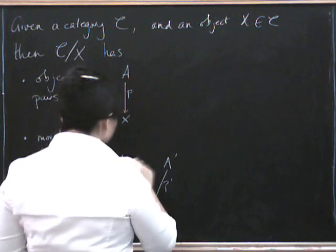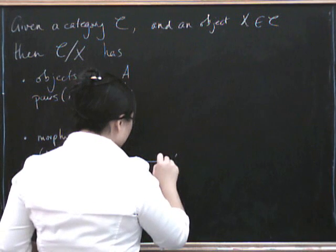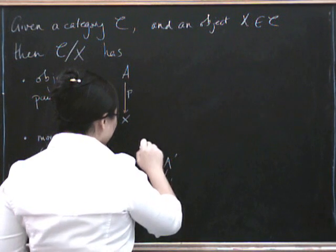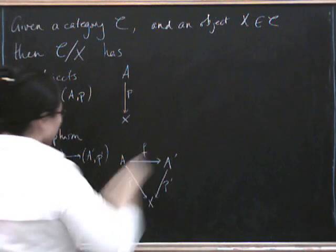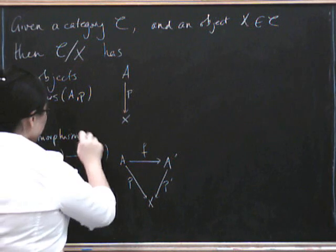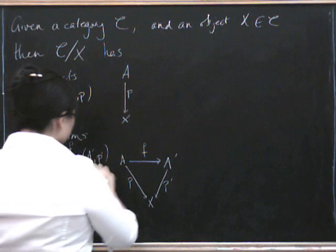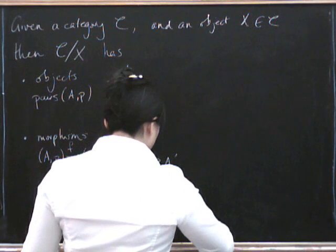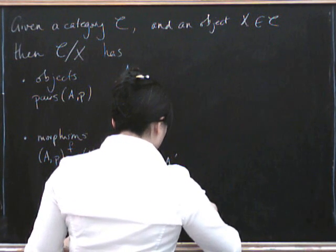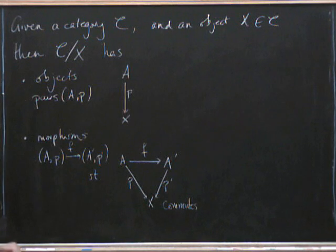Well yes, it's going to be a morphism from A to A prime such that this triangle commutes. So the morphisms are F from here to there such that this triangle commutes.